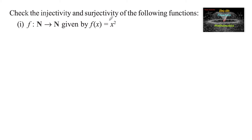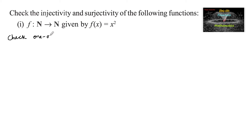Check the injectivity and surjectivity of the following functions. First one: f from ℕ to ℕ given by f(x) = x². We need to check one-to-one and onto, that is injection and surjection. Let's check first for one-to-one, that is injection.